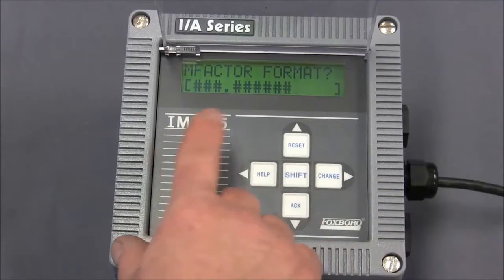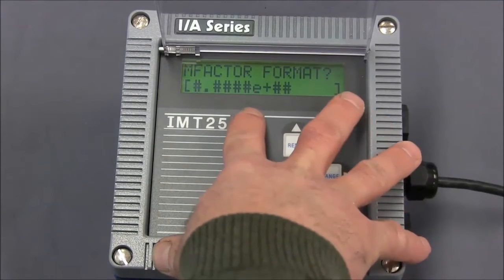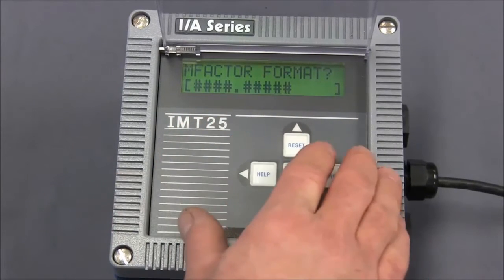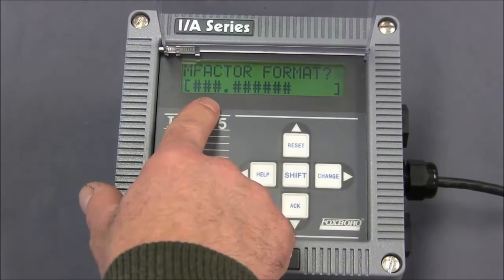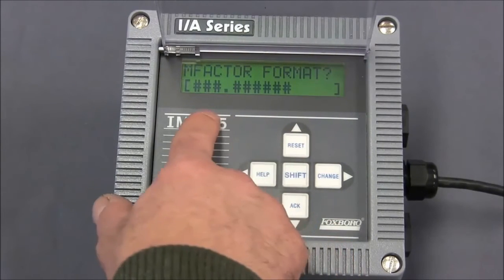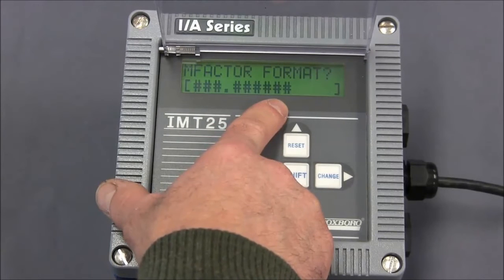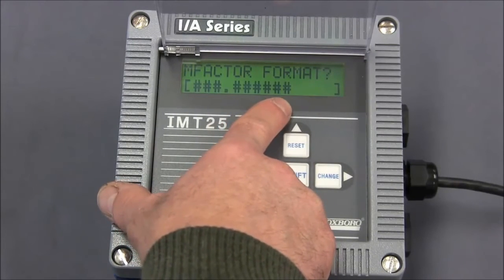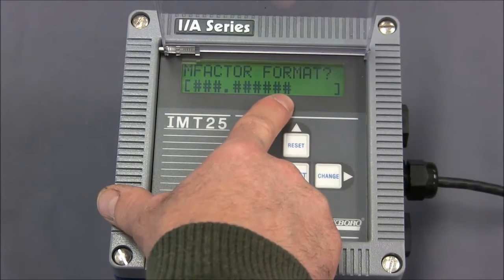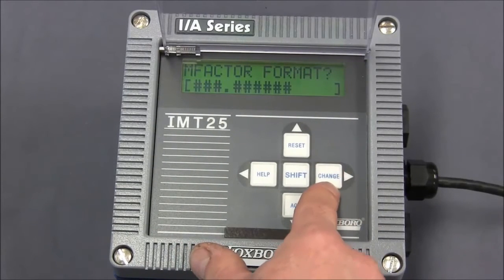When we do that, the entire line will begin flashing. Our choices are exponential format, four positions to the left of the decimal point and five positions to the right, or three positions to the left and six positions to the right of the decimal point. So for us, we'll leave this at three positions to the left and six to the right. If you had a calibration factor that had more than six positions to the right of the decimal point, you would have to round it to the last six positions. So we're going to accept this format, and to accept it, we simply hit the change key.